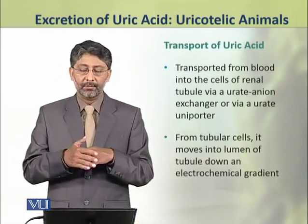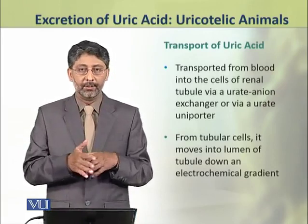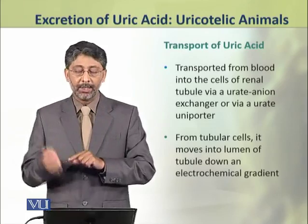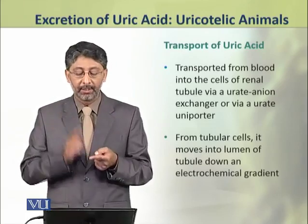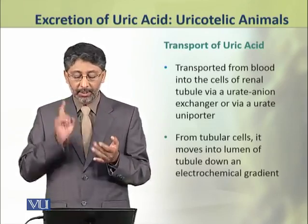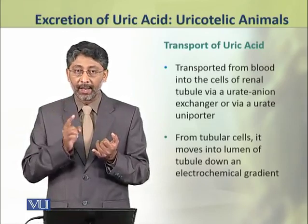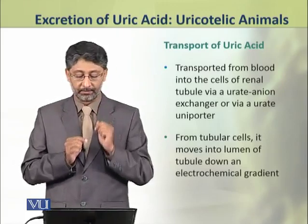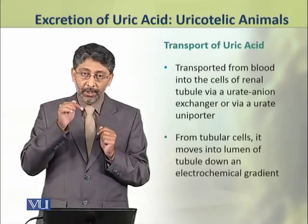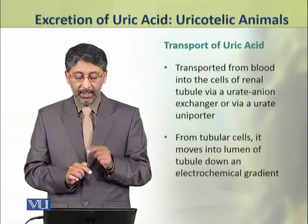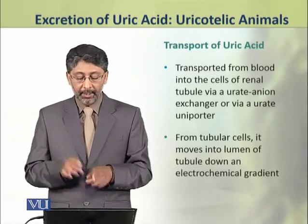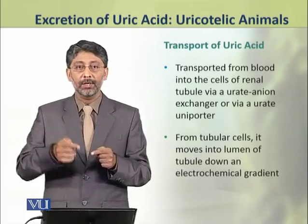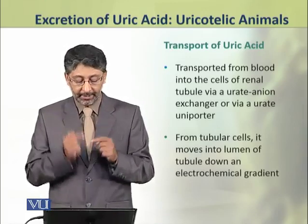Once uric acid is formed, it is transported from the blood into the cells of the renal tubule through a urate anion exchanger or through a urate uniporter. When this uric acid reaches the tubular cells, it then moves into the lumen of the tubule down an electrochemical gradient.